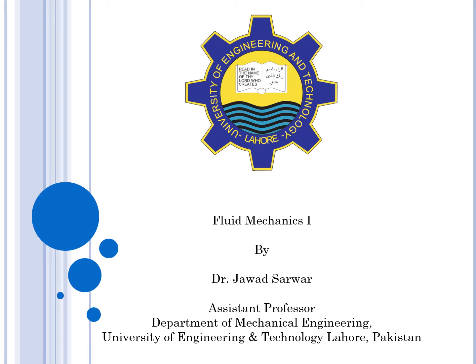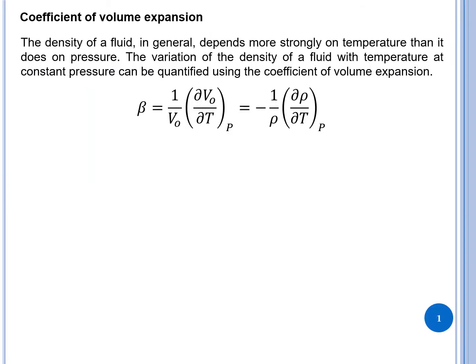In this presentation we are going to learn about the coefficient of volume expansion. The density of a fluid in general depends more strongly on temperature than it does on pressure. In everyday examples you see this — for example, the blowing of wind: although the pressure is almost constant, wind blows because of differences in temperature. The variation of fluid density with temperature at constant pressure can be quantified using the coefficient of volume expansion, represented by beta.